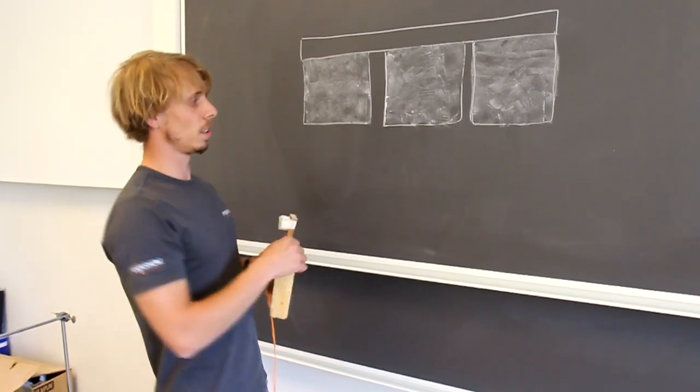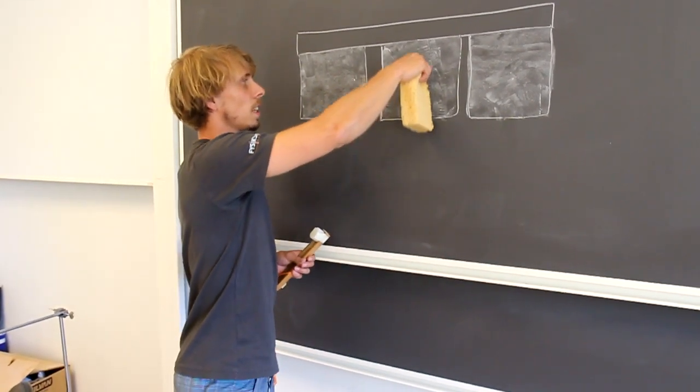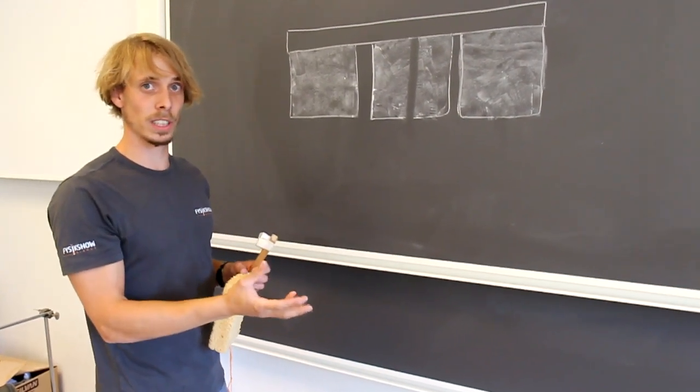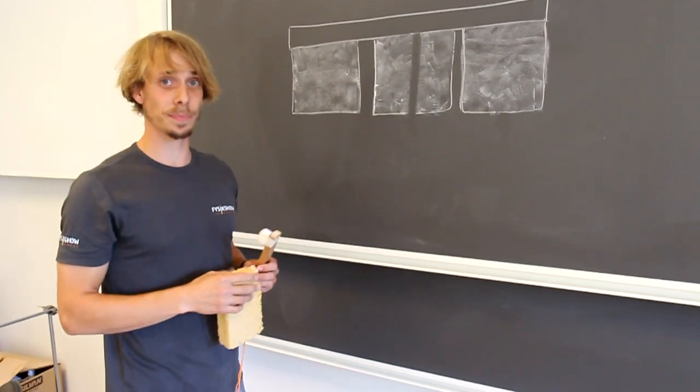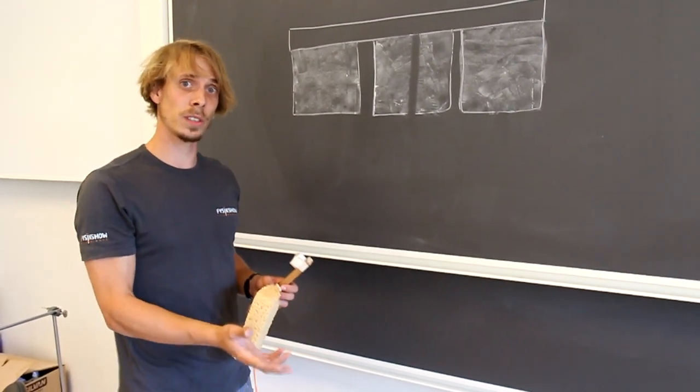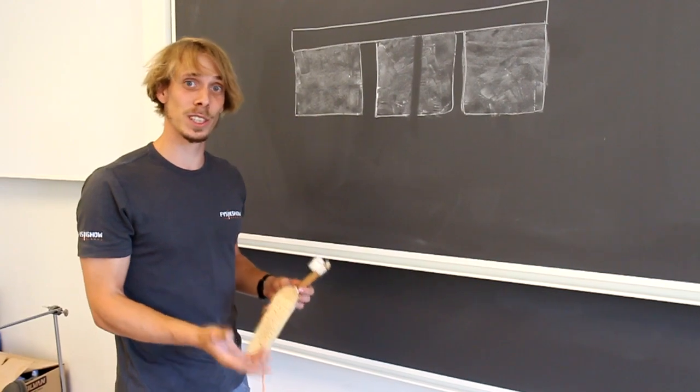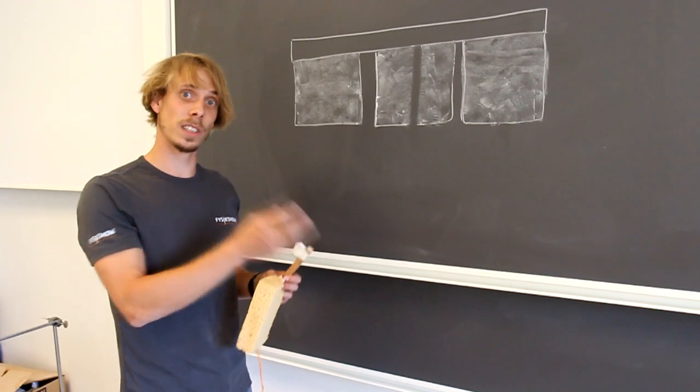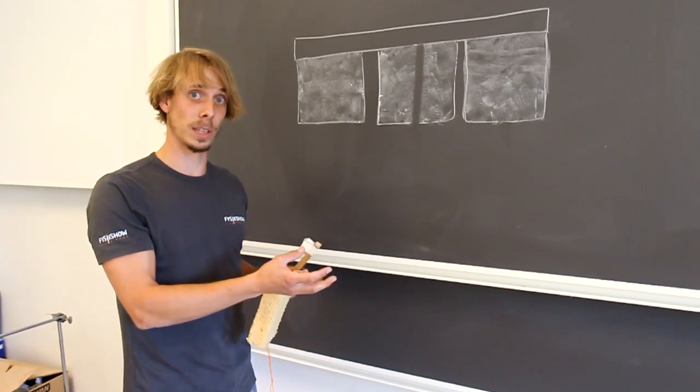That means that the bullet goes through the cannon and stays in there, so there goes some energy to destroying this cannon. Instead of thinking about the kinetic energy, you should think about the momentum, because the translational momentum is always conserved in a collision. So the momentum before and the momentum after the collision is the same.